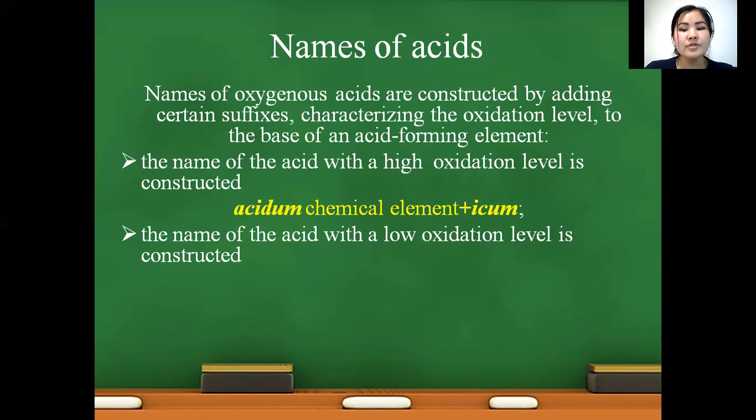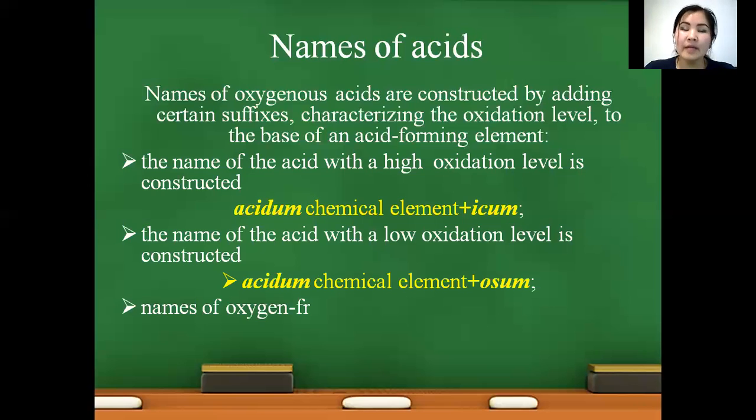Names of acids with a low oxidation level are constructed with the help of word acidum, Latin name of chemical element plus suffix -osum. And names of oxygen free acids are constructed with the help of word acidum, prefix hydro- attached to Latin name of element and suffix -icum.